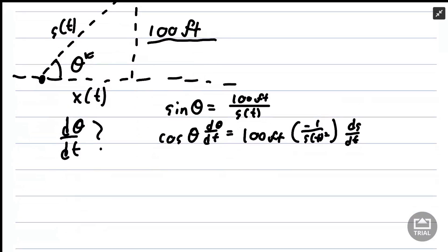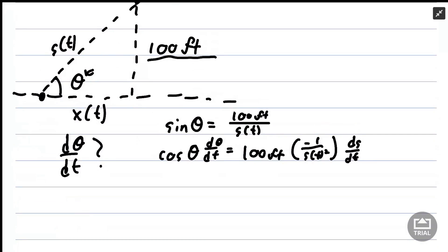I'm going to use Pythagoras's theorem. I'm going to relate the sides of this triangle by writing s(t), the length of our string, equals the height of our triangle, 100 feet squared, plus x(t) also squared.